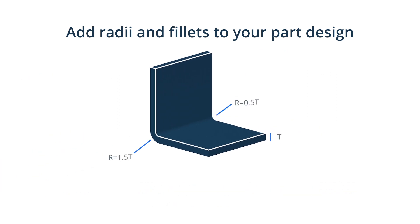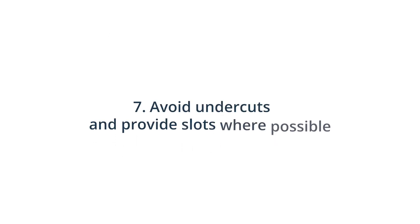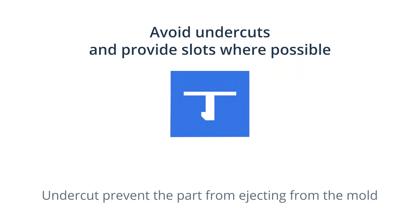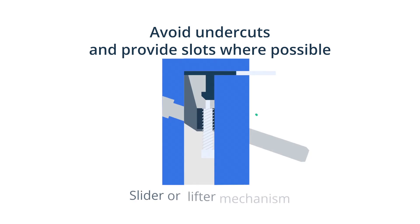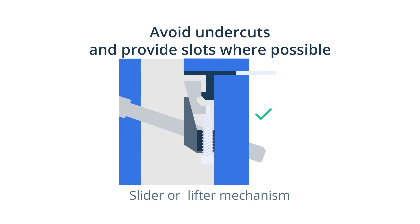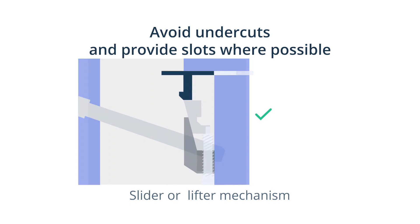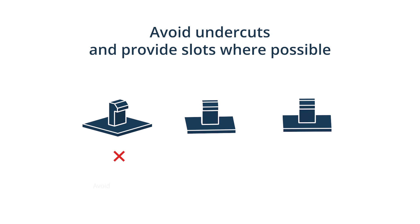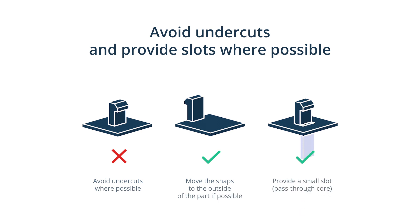Add internal radii at least 0.5 times the thickness of the adjacent wall and external radii 1.5 times the size. 7. Avoid undercuts and provide slots where possible. Complex part geometries and parts with snap fittings have undercuts that prevent the part from ejecting from the mould. Often these undercuts are formed using a mechanism called a slider or lifter — a moveable mould part that slides inside once closed and slides out before it opens. This mechanism adds complexity and increases mould costs. In the case of a simple cantilever snap, you can avoid this expense by either moving the snaps to the outside of the part if possible, or providing a small slot or pass-through core at the base of the cantilever.